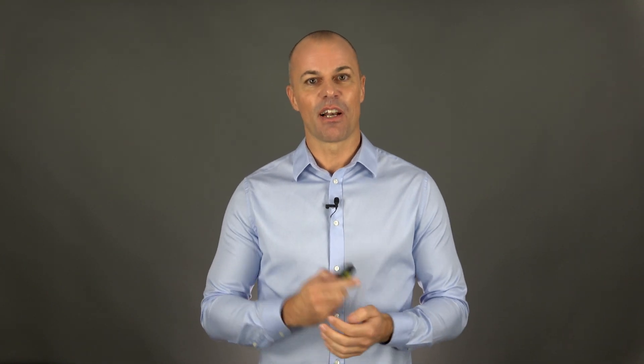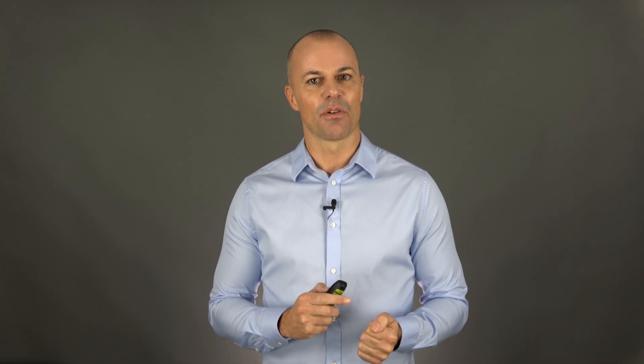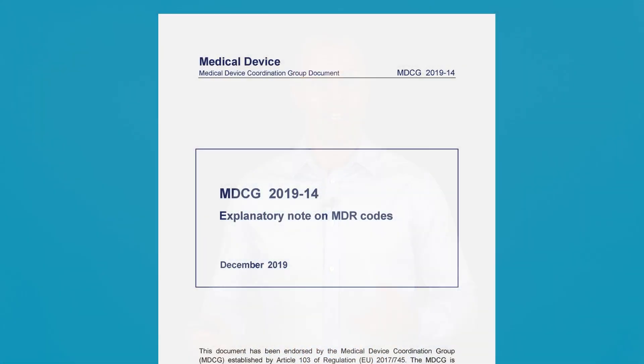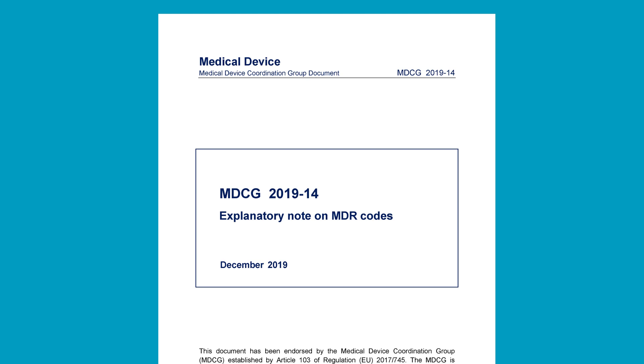That was the explanation of the MDR codes. To clarify the MDR coding system a bit, there is an MDCG endorsed document published related to these codes. You find a link to that MDCG document under this video. This MDCG endorsed document is MDCG 2019-14, named Explanatory Note on MDR Codes. It explains the coding and also includes some helpful examples of devices for each code.